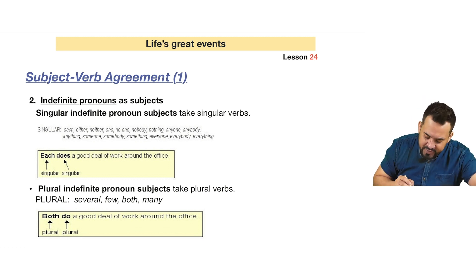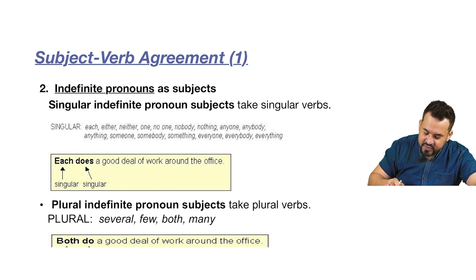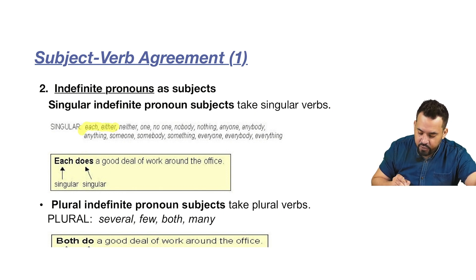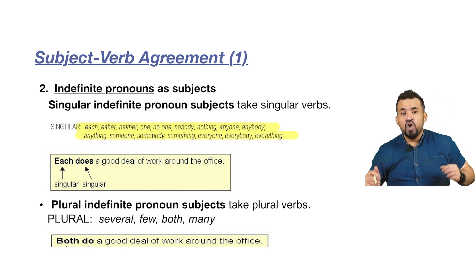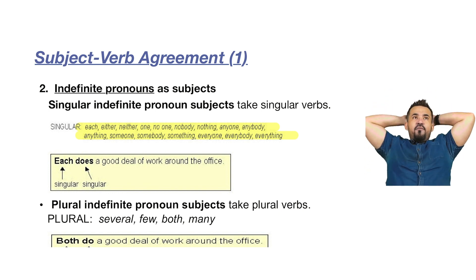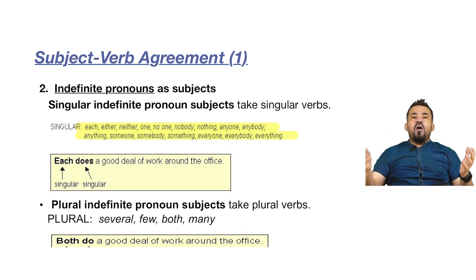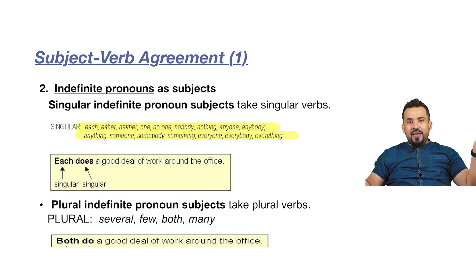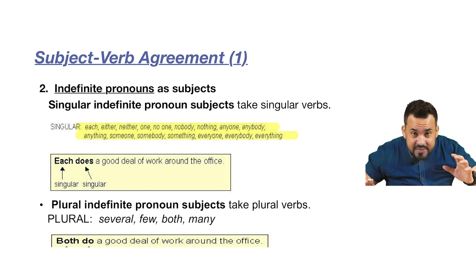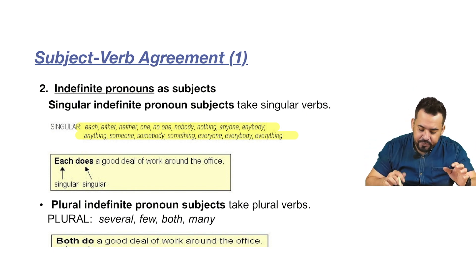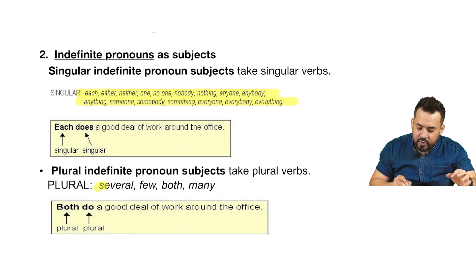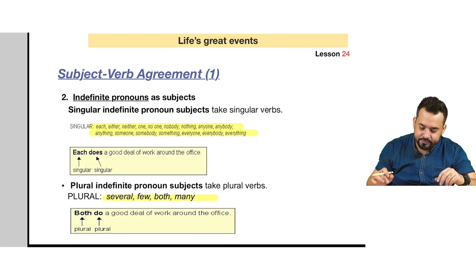These indefinite pronouns are always singular: each, other, neither, one, no one, nobody, nothing, anything, anybody, someone, somebody, something, everyone, everybody, everything. For example, 'everyone plays well' — the verb is 'plays' with an S because 'everyone' is singular. These indefinite pronouns are always plural: several, few, both, and many.